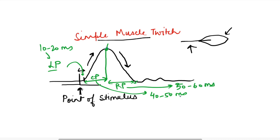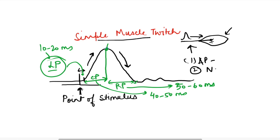Why is there a latent period? When we stimulate the nerve with adequate stimulus strength, there is an action potential, and this action potential travels along the nerve — so action potential propagation takes some time. Once it reaches the neuromuscular junction, there are steps of neuromuscular transmission before the skeletal muscle is excited. Then there is release of calcium from the stores, calcium binds to troponin — this is excitation-contraction coupling. All this time accounts for the delay between the point of stimulus and the start of contraction — these are the reasons for the latent period.